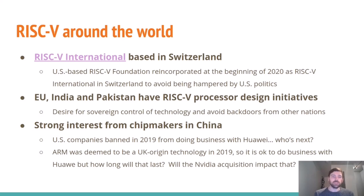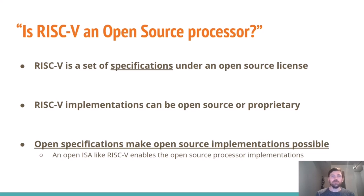There's also strong interest from chip makers in China. Back in 2019, US companies were banned from doing business with Huawei, and there's concern about which company might be next. ARM was ultimately deemed UK-origin technology so they could continue, but how long will that last and how will the Nvidia acquisition impact that? Sometimes people ask: is RISC-V an open source processor? That's not quite right — RISC-V is a set of specifications under an open source license. Implementations can be either open source or proprietary. Open specifications make open source implementations possible.